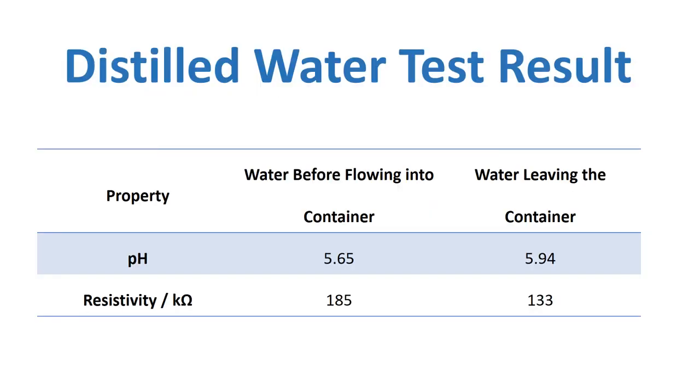The result is that when the distilled water flows through the magnetic field, the initial pH was 5.65, and when the water leaves the magnetic field, pH immediately increased to 5.94. This is a great finding where electrons were generated and the pH increased. Similarly, when we recorded the resistivity of the water before flowing into the container, it was higher at 185 kilohm. But after leaving the container, because of the electrons generated in the water, it becomes lower at 133 kilohm.